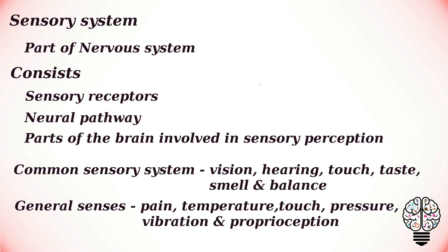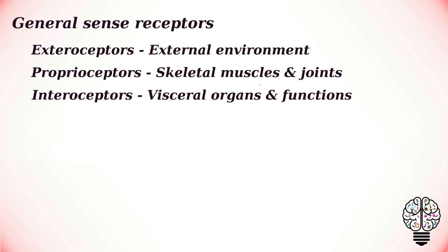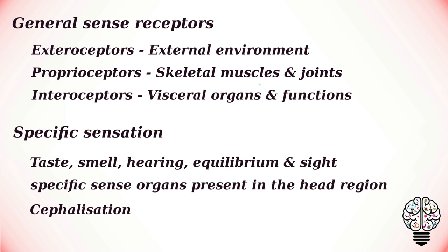General sensations are received by general sensory receptors, which when stimulated send the sensation to the central nervous system. General sense receptors are basically of three types: exteroceptors, which provide information about the external environment; proprioceptors, which provide information about skeletal muscles and joints; and interoceptors, which provide information about visceral organs and functions.